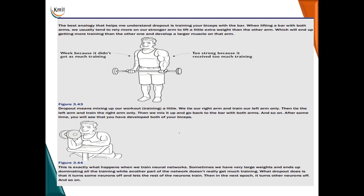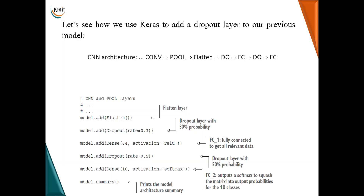A helpful analogy for dropout is training your biceps with a barbell. When lifting with both arms, a person tends to rely on the stronger right arm, so it gets more training and develops larger muscles. To fix this, you tie the right arm and train the left, then tie the left and train the right, mixing it up. Over time, both biceps develop equally — similarly, by training different features in each iteration, the model improves its overall accuracy.